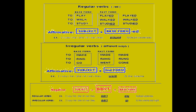Burada bilmeniz gereken önemli şey: olumsuz cümlede didn't — yani yardımcı fiilimizi kullanıyoruz. Önce özne, sonra didn't, sonra base form — yani fiilin birinci hali. Olumsuz cümlede fiil ikinci haline gelmiyor. Çünkü 'did' yardımcı fiilimiz zaten ikinci halinde kullanılıyor ve 'not' ekini alıyor. Bu yüzden ana fiillerimiz present formunda — yani birinci halinde — kullanılıyor. Sadece didn't ekliyoruz özneden sonra — bunu unutmayın.